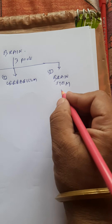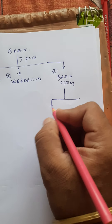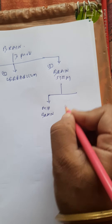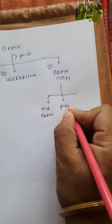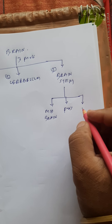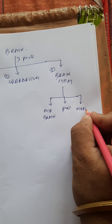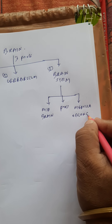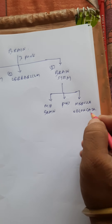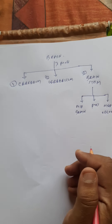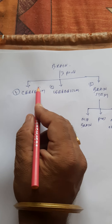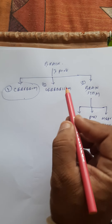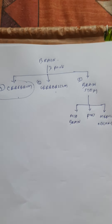The three parts of the brainstem are midbrain, pons, and medulla oblongata. We have already learnt this. Now I will be discussing about individual parts of the brain — first cerebrum, then cerebellum, and then brainstem.